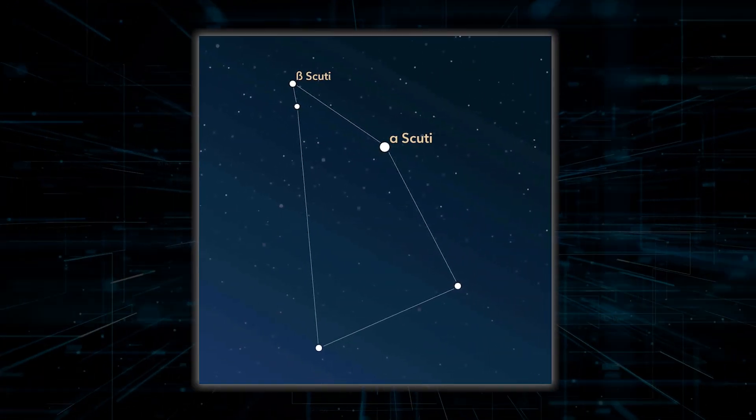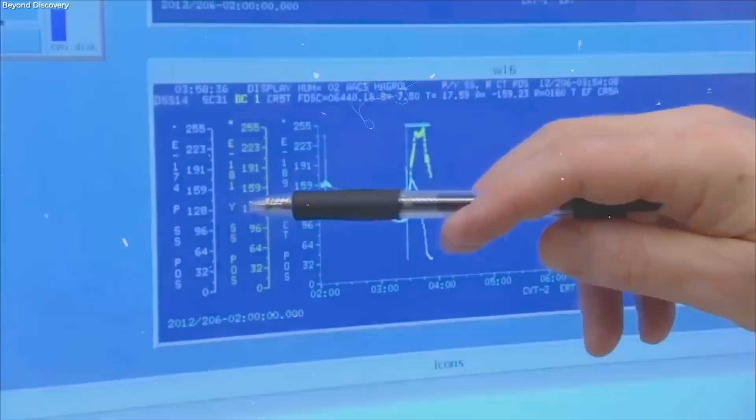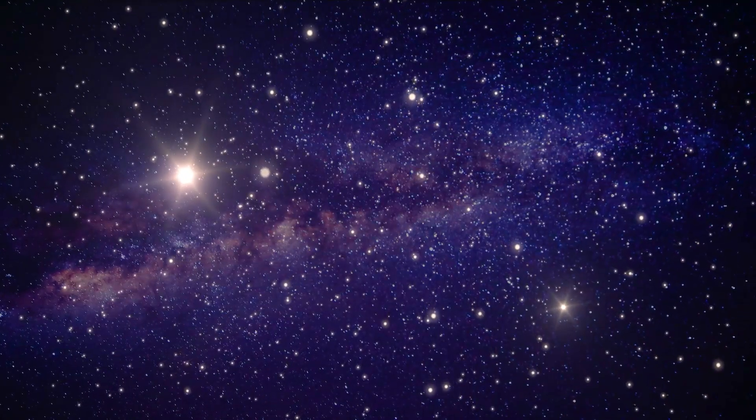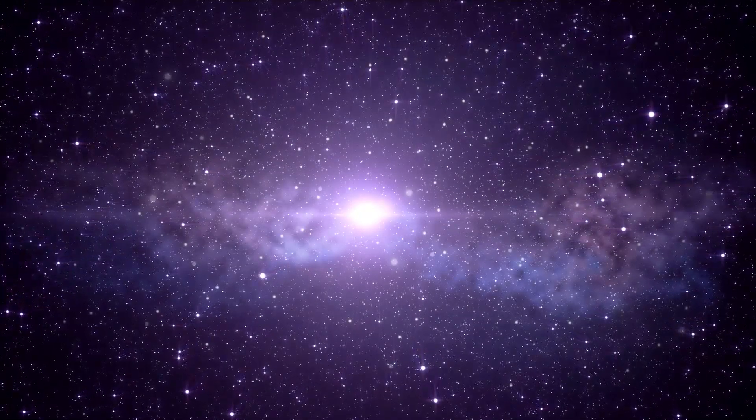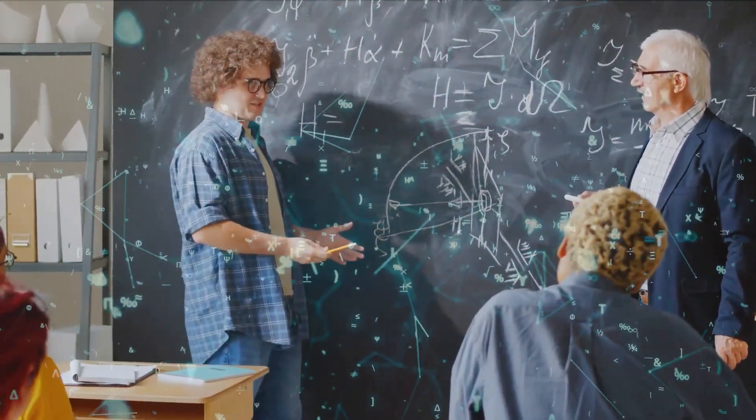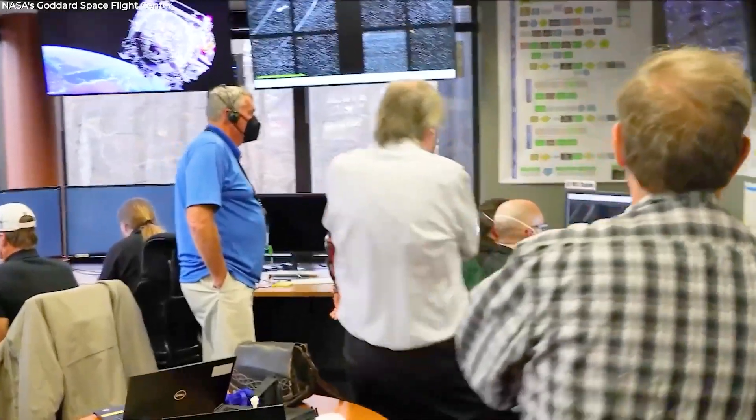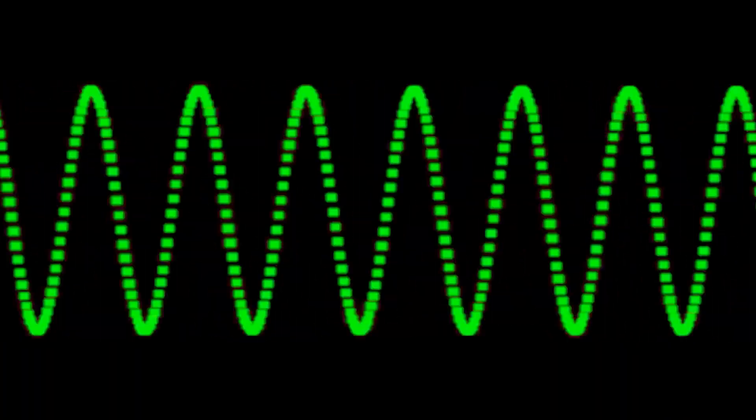But you know what is the weirdest thing about this constellation? Scientists are receiving strange signals from a mysterious object from this constellation every 22 minutes. This strange signal doesn't fit any known object without some major revisions to current physics.